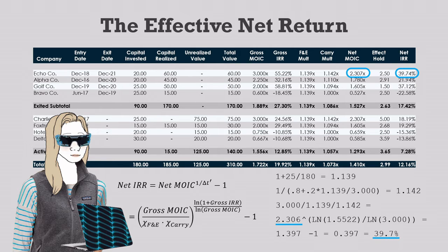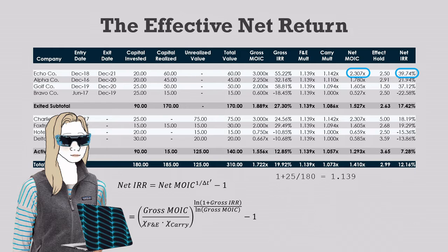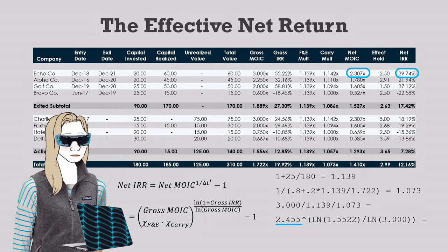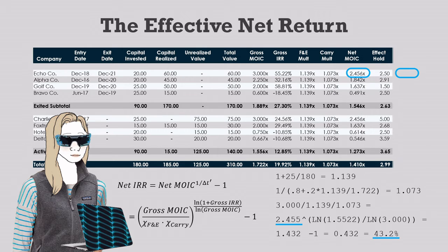This is Echo Company's deal-by-deal net IRR. To see its pooled IRR, we simply replace its deal-by-deal carry multiplier with the portfolio's carry multiplier of 1.073. This makes the net multiple a bit higher at 2.455. Raise this to the power of 1 over Echo Company's effective hold again, and we get 1.432. Subtract 1, and we get a net IRR of 43.2%. This net multiple and net IRR match the net returns on the table for the pooled carried interest model.